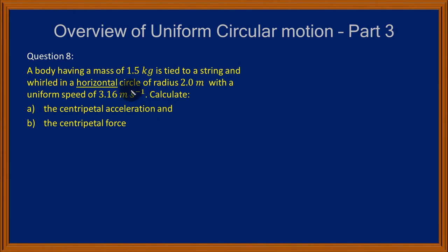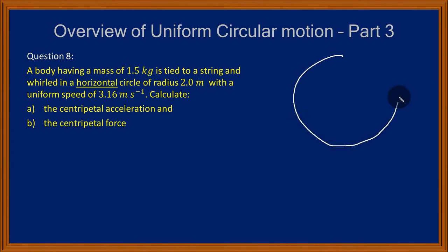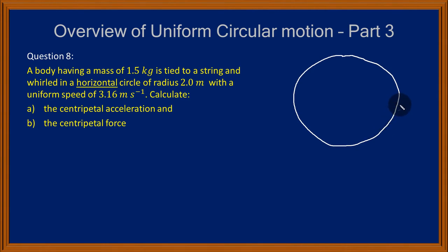We are asked to calculate the centripetal acceleration and the centripetal force. I have underlined 'horizontal circle' because in the next question, question number 9, we are going to look at a vertical circle. When I draw this circle, understand we are looking at this circular path from above so that this is the horizontal plane. This circle is in the horizontal plane.